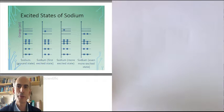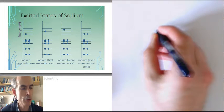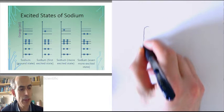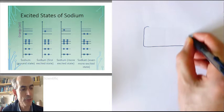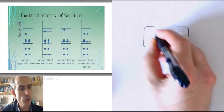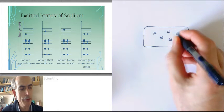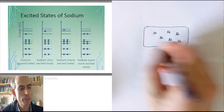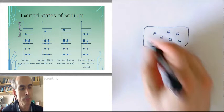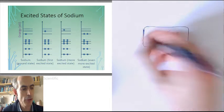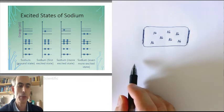Now, a low-pressure sodium vapour lamp works by having effectively a gas, a vapour, of sodium atoms floating around. There aren't many of them. That's why it's called a low-pressure sodium vapour lamp. And you put an electric field across the sodium vapour,